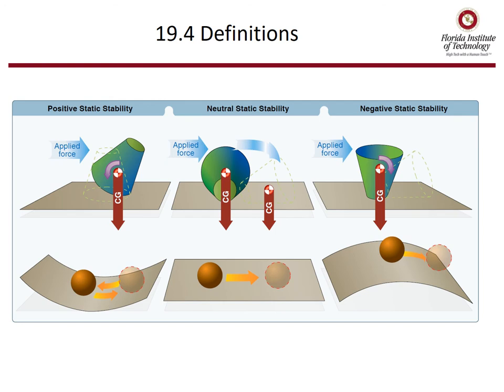On the left is positive static stability — if the cone on top or the ball at the bottom is displaced, it will return to its original condition. In the middle, neutral static stability means that if displaced, the system just stays at the new position. On the right, negative static stability means that if displaced, like a cone flipped upside down, it will just fall over and the ball on top of the curve will roll off and not return to trim.